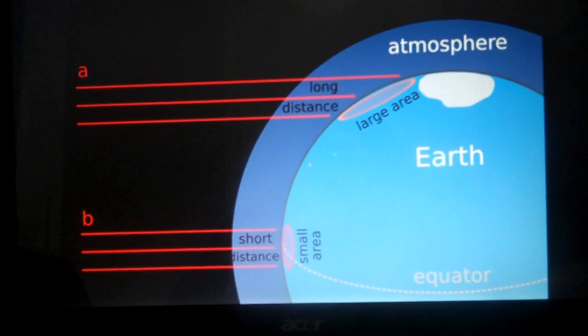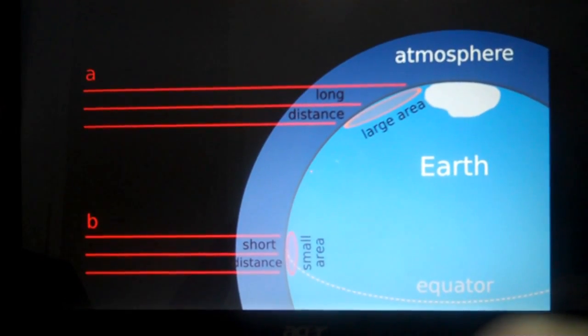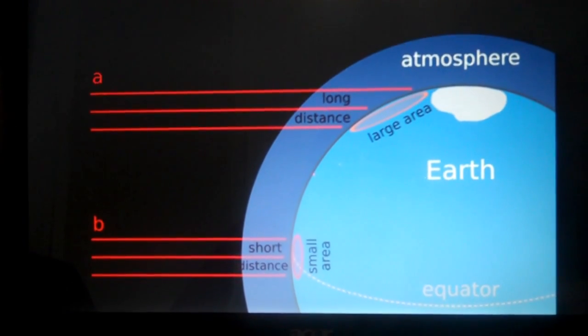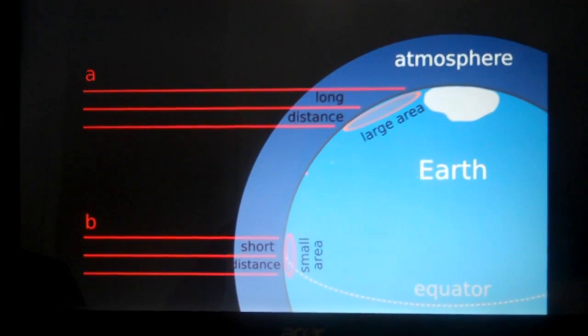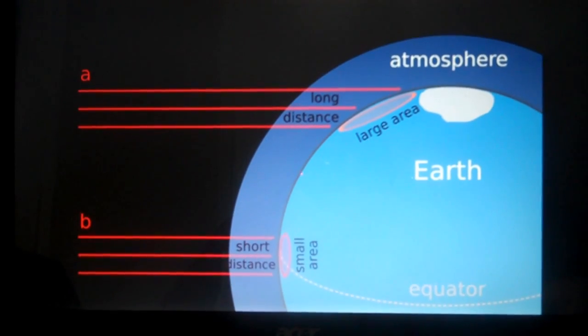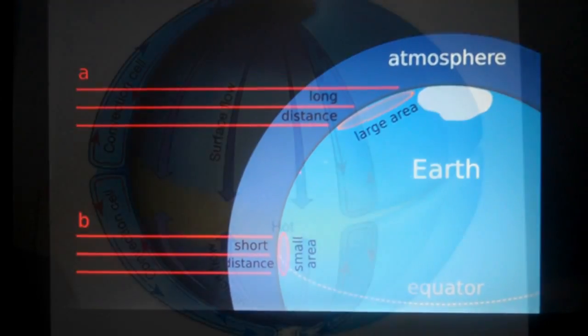Because of this, there is less energy being absorbed at the poles than there is being released, and there is more energy being absorbed at the equator than there is being released. The way the Earth deals with this is through atmospheric circulation by sending warm air up to the poles and bringing cold air back down to the equator.